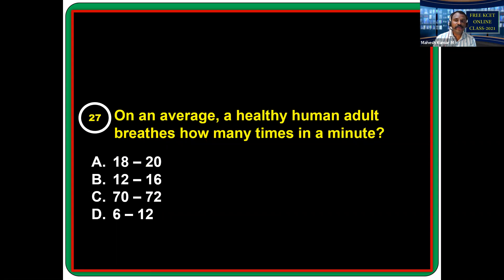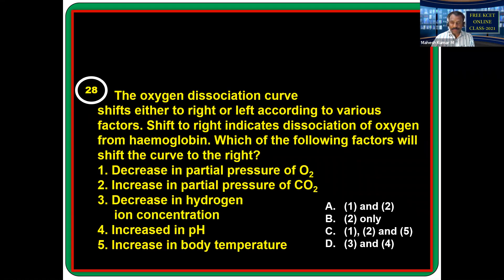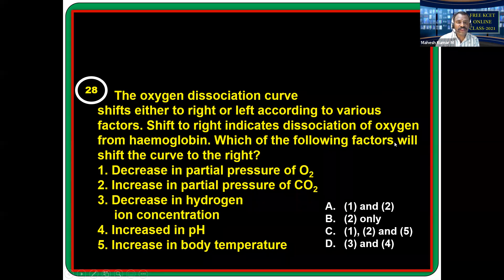On average, a healthy human adult breathes around 12 to 16 times per minute. The oxygen dissociation curve shifts either to the right or left according to various factors. Shift to the right indicates dissociation of oxygen from hemoglobin.